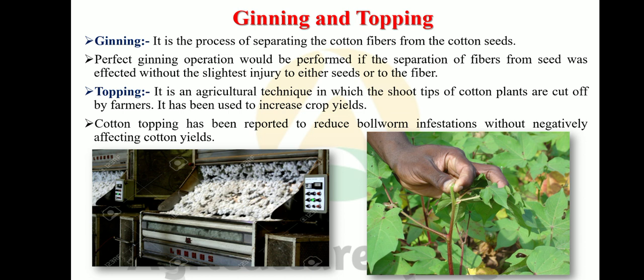Topping in cotton: Topping is an agricultural technique in which the shoot tips of cotton plants are cut off by farmers. It has been used to increase crop yield. Cotton topping has been reported to reduce bollworm infestation without negatively affecting cotton yield. This is a very important topic for multiple choice exam preparation. In the photograph, the farmer is doing the topping exercise.